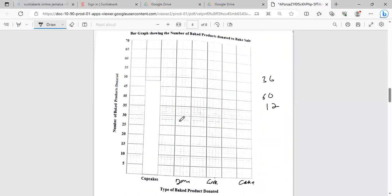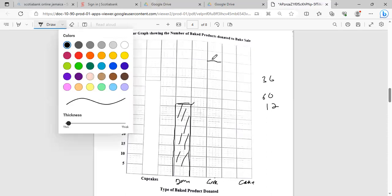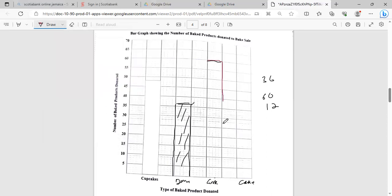The number of doughnut was 36, the number of cookie was 60, and the cake was 12. So doughnut should be 36, which is at 35, so right about here. Let's draw a bar here.